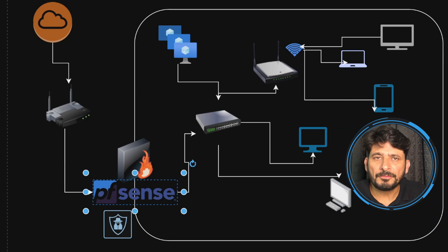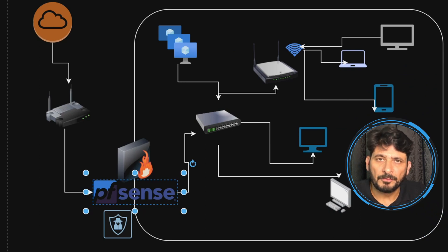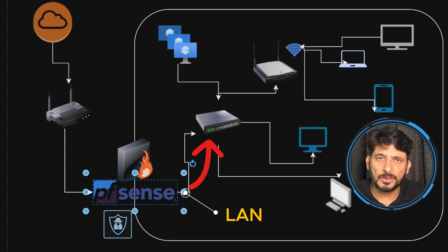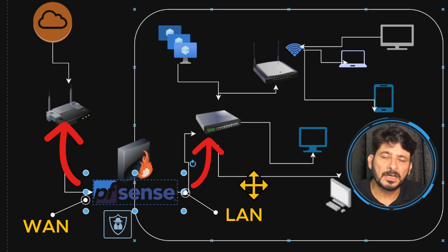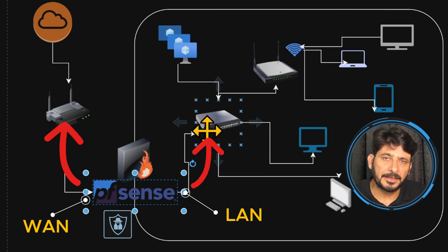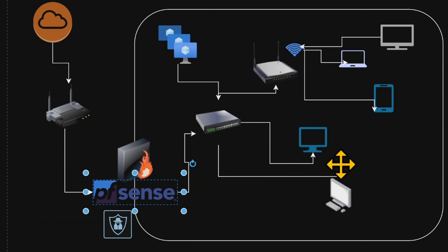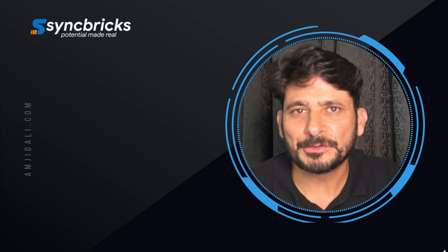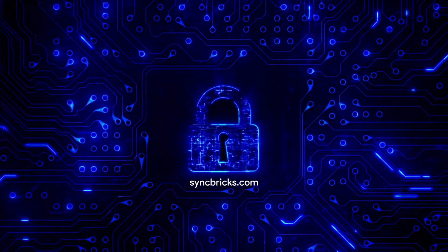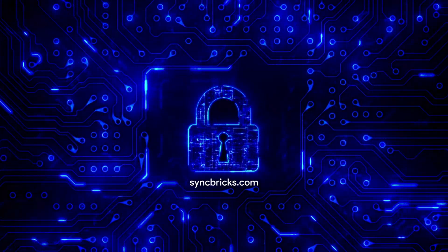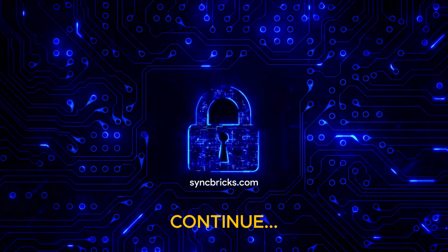I have now connected the pfSense hardware device on my network. The LAN port is connected to the switch, and the WAN port is connected to the router or gateway device provided by the telecom company. Let's continue to the next video to understand how to configure pfSense in a production environment.